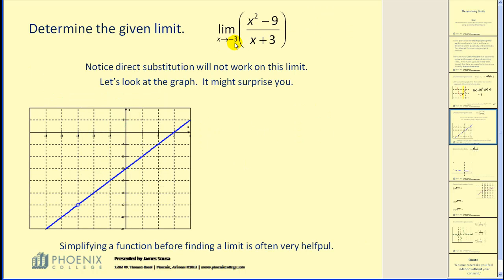Now let's take a look at this limit as x approaches negative 3. Here is the line x equals negative 3. As we approach from the right and the left, we can see we're approaching this hole in the function. We can also see that this y value would be negative 6, so we can predict this limit would equal negative 6. However, our goal is to find an analytical method that would make it easier to find this limit. The problem is performing direct substitution in this form would result in a 0 in the denominator.